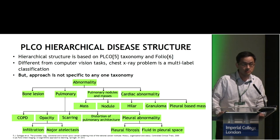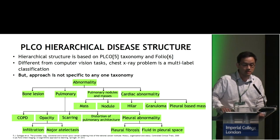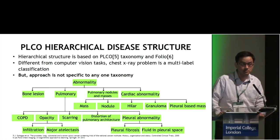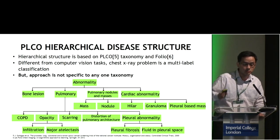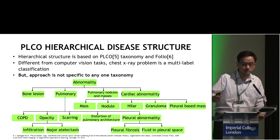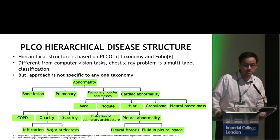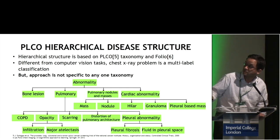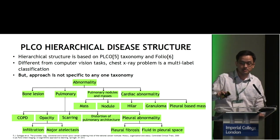This is the hierarchical disease structure we used in our method. It is based on the PLCO taxonomy. This is different from computer vision tasks — it is a multi-label classification, not multi-class. We want to claim that our approach is general enough and not specific to any one taxonomy. For example, at the top right you can see the mass and nodule, which belong to the same subcategory of pulmonary nodules and masses — so they are siblings of each other.